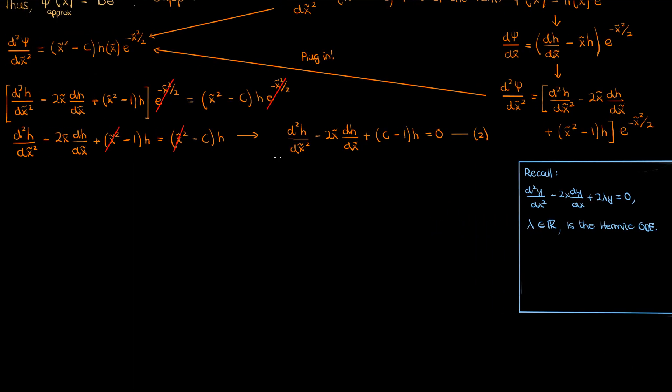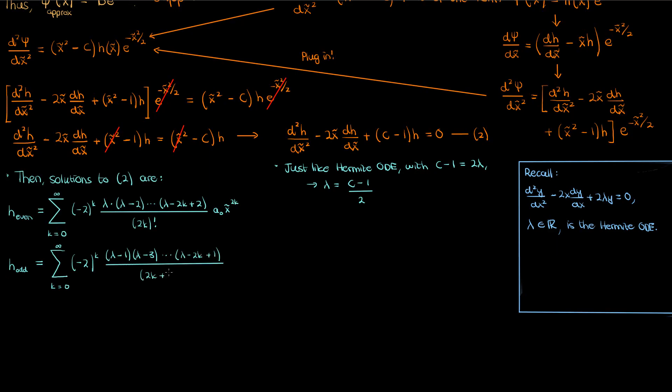So let's use these recalled facts and apply them to the simplified harmonic oscillator equation. You can see that our equation 2 looks just like the Hermite ODE with c - 1 representing 2λ, which would mean that λ would be given by (c - 1)/2. So therefore if we look at the solutions to the Hermite differential equation, the corresponding solutions for the even and odd series indices would look like this. I've retained the λ here instead of c - 1 over 2 just because it simplifies my notation.